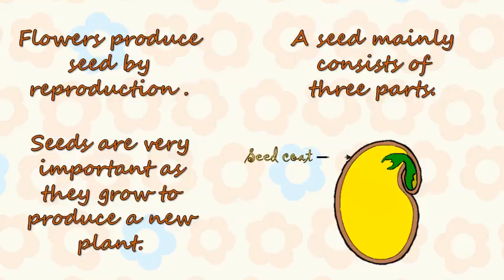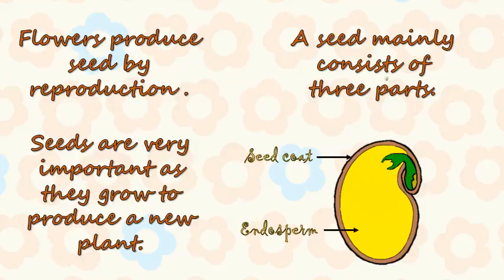The three parts of a seed are: seed coat, endosperm, and embryo.